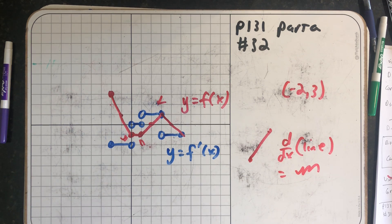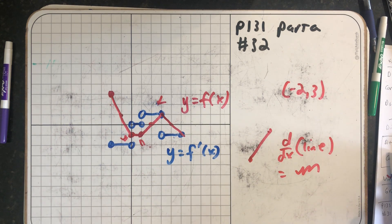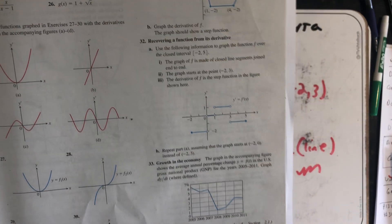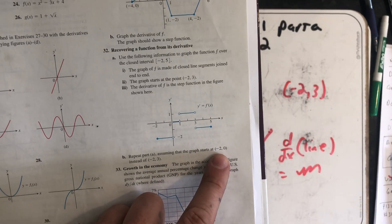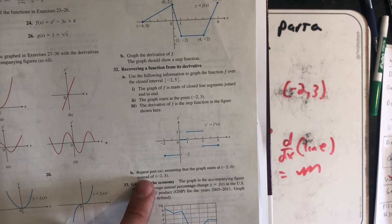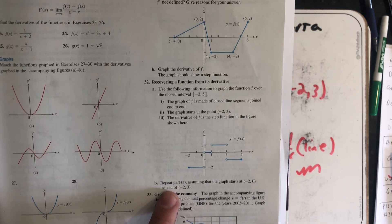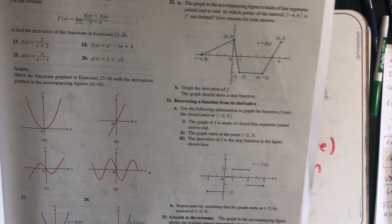So I've done it. We've recreated the function y equals f(x) with the information given. Now, if you wanted to try this again on your own, part b has you start the graph at (-2, 0) instead of the point (-2, 3). And I do think that makes a good exercise. Give that a try.